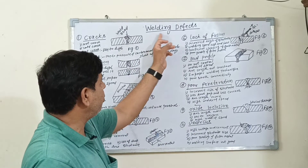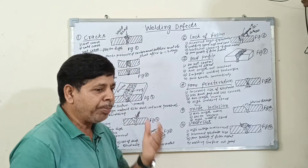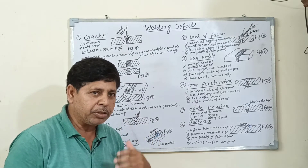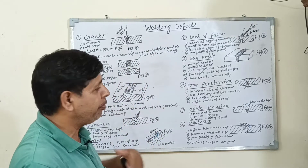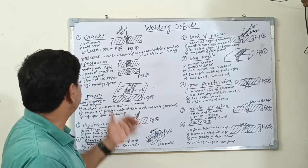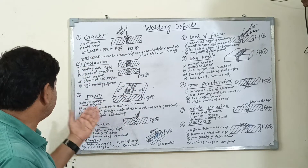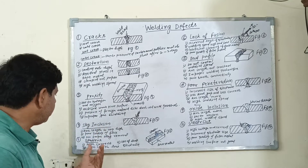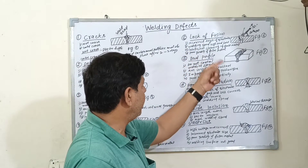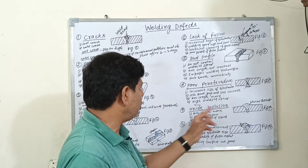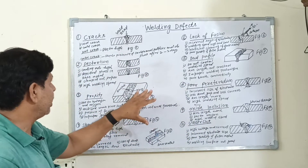My topic is welding defects. When you are performing the welding on any plates or any machine parts, you can see different types of welding defects like cracks, distortion, porosity, slag inclusion, spatters, lack of fusion, bad profile, poor penetration, oxide inclusion, and undercut. These are the welding defects.